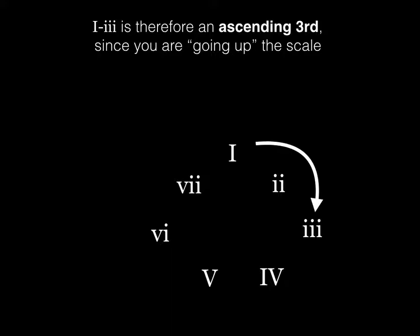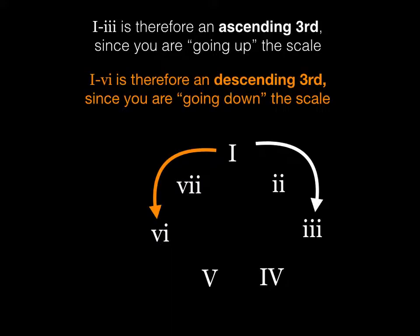One to three is an ascending third since you're going up the scale: one, two, three. You're ascending, going up. So the relationship between one going to three—the root is an ascending third. The root from one to three is ascending.